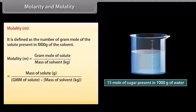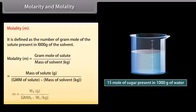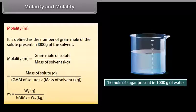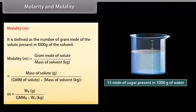Mathematically, molality m = WB (in grams) / (gram mole mass of B × WA in kilograms). A solution containing one mole of solute per one thousand grams of solvent has molality equal to one and is called a molal solution.